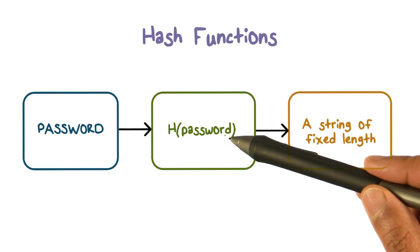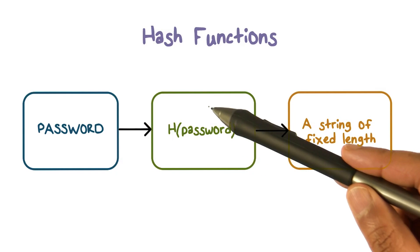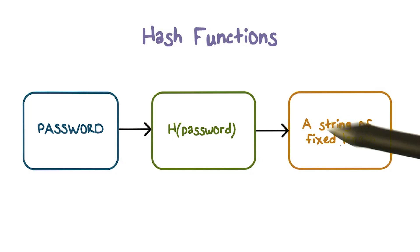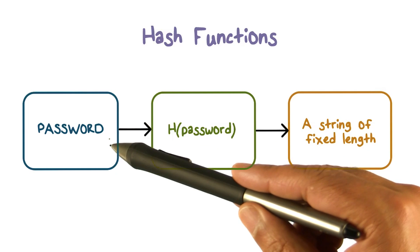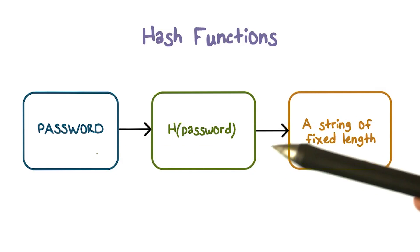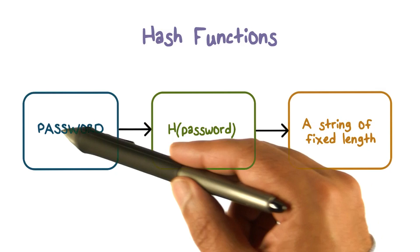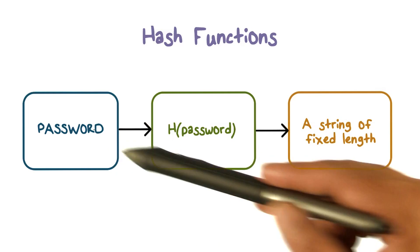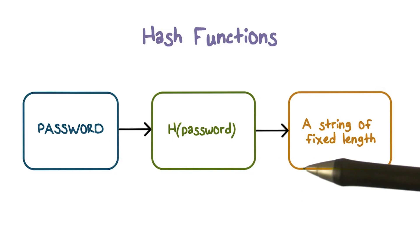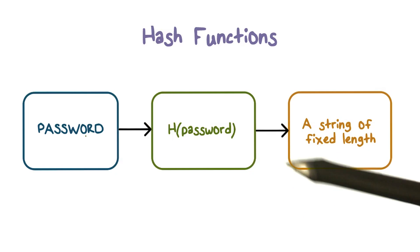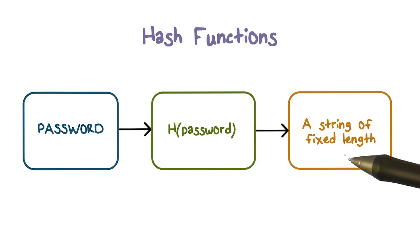A hash function — the input is a password. This box is the hash function, and whatever computation goes on here happens inside it. The output: this password could be any length — could be a passphrase that combines a bunch of words, letters, digits, whatever it is — but it produces a hash value of a fixed length.